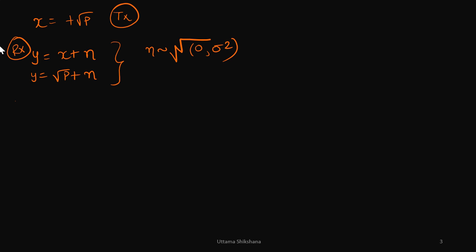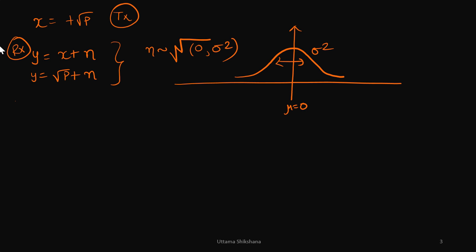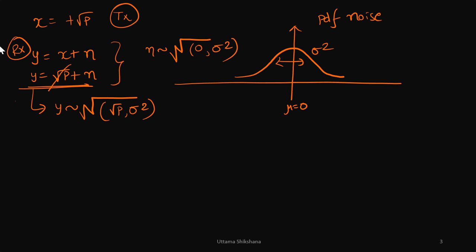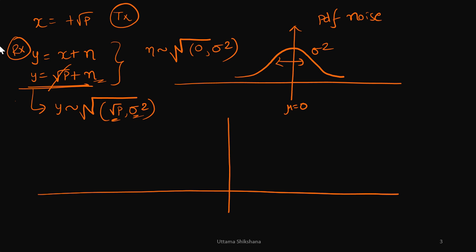The noise PDF has mean mu equals 0 and variance sigma squared. Now, y will also be Gaussian, but with mean square root of P and variance sigma squared — because P is a constant, its mean is square root of P, noise mean is 0, so the combined mean is square root of P, and the variance is sigma squared.